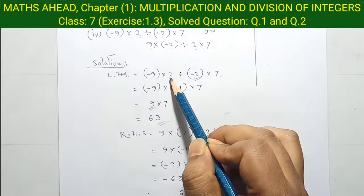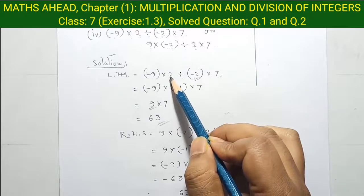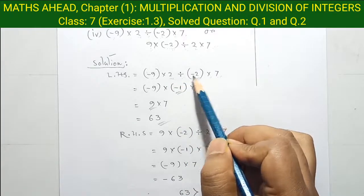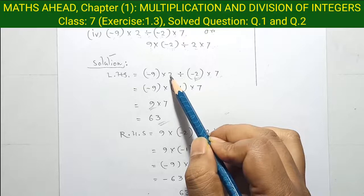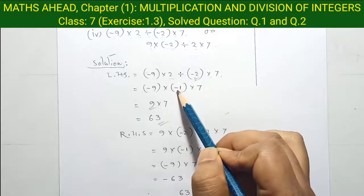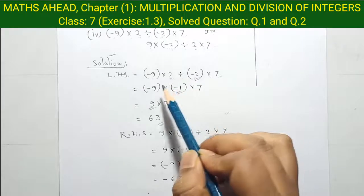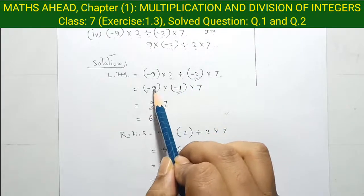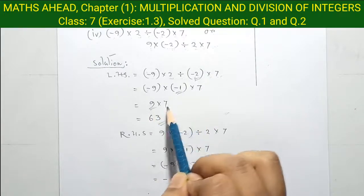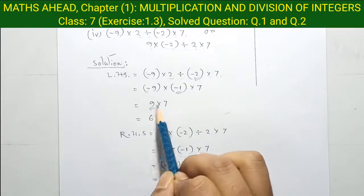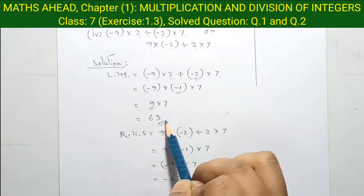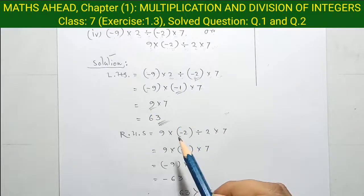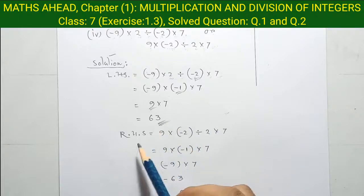Next: minus 9 into 2 divided by minus 2 into 7. At first we divide 2 by minus 2, so 2 by 2 equal to minus 1. Finally, minus and minus became plus, 9 into 1 equal to 9. So 9 into 7 is 63. This is our left hand side value.